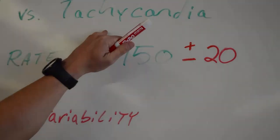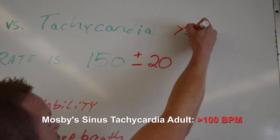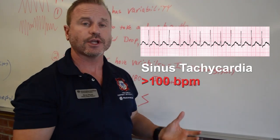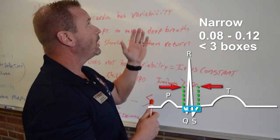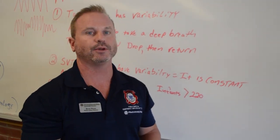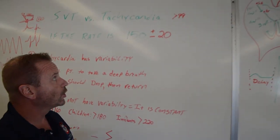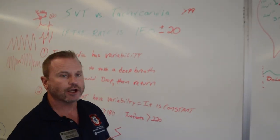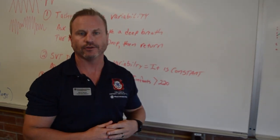Sinus tachycardia is any rate over 99 beats per minute. It is a narrow complex, meaning it originates in the atria, and it's a normal sinus process — it should have a P-wave and a narrow QRS under three boxes or 0.12 seconds. It's very benign in itself. We see sinus tachycardia from jumping jacks, running in place, or drinking a lot of energy drinks. We don't normally treat it; it's very rarely symptomatic. Only when it gets around 150 may the patient feel a little lightheaded or notice fluttering in their chest.